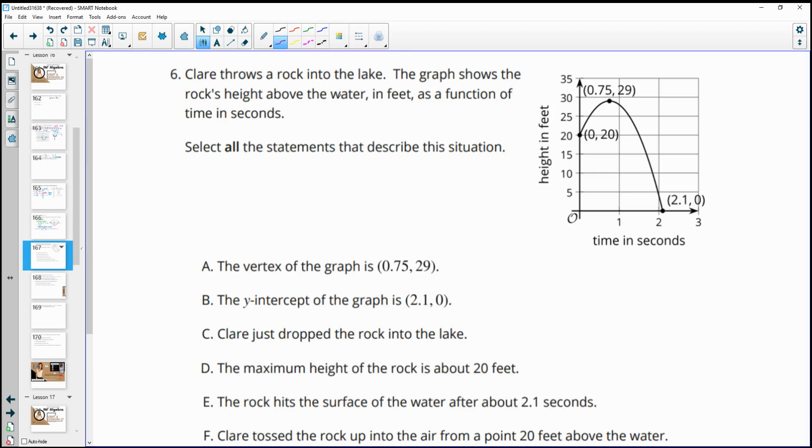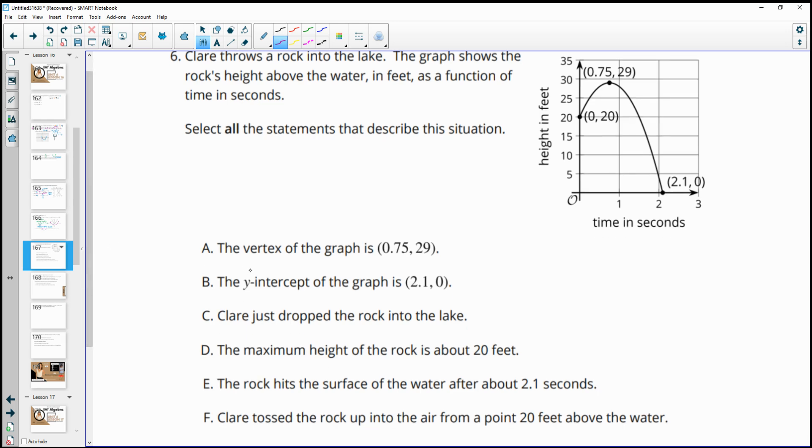Number six, Claire throws a rock into a lake. The graph shows the rock's height above water in feet as a function of time in seconds. Select all statements that describe this situation. So the vertex is (0.75, 29). And that's true because when it's opening downward, the vertex is the maximum.